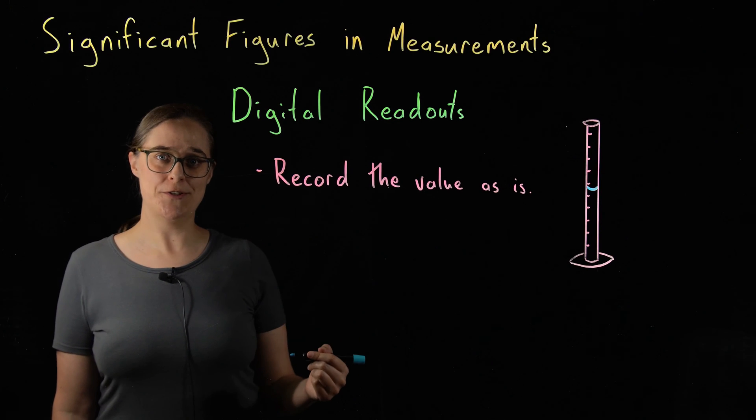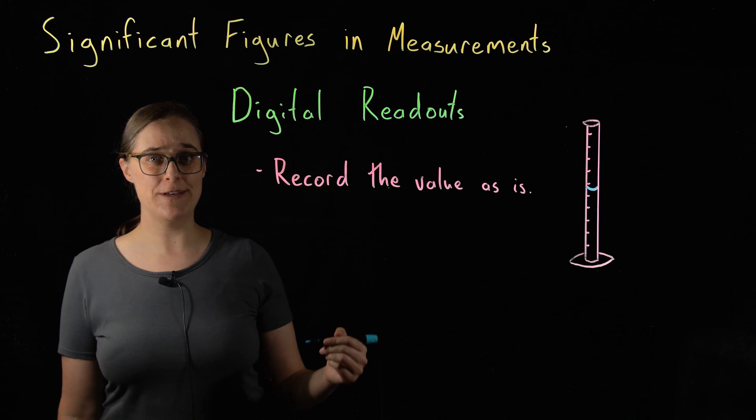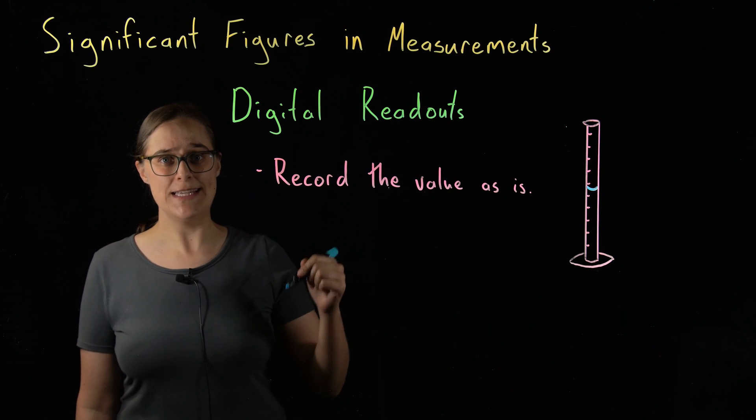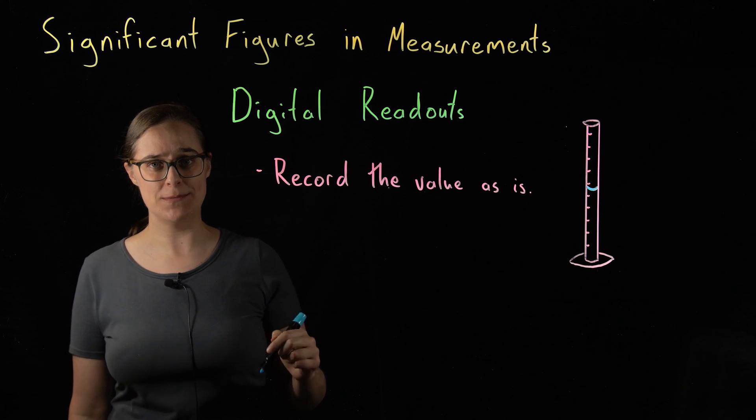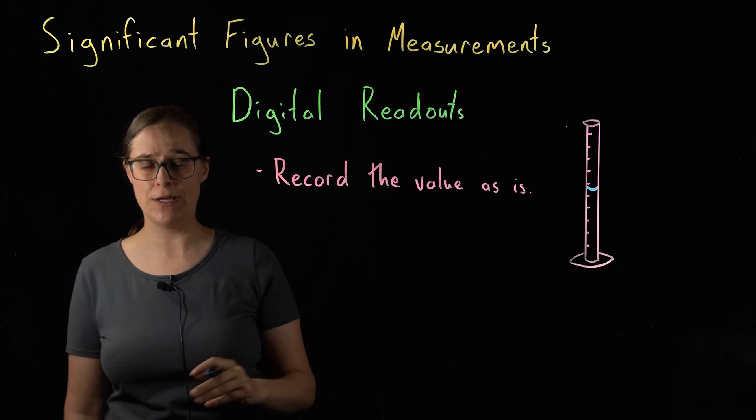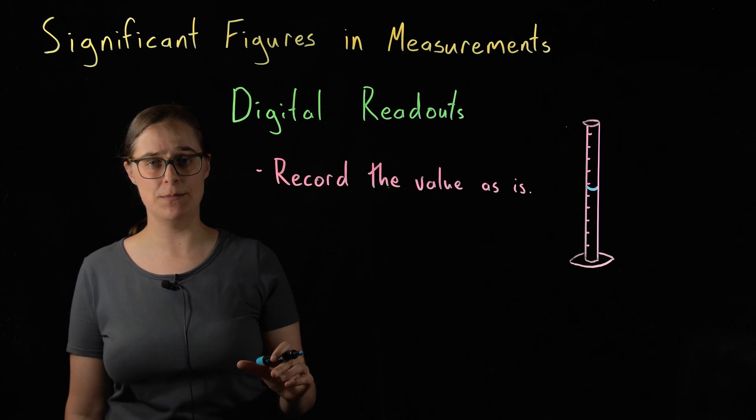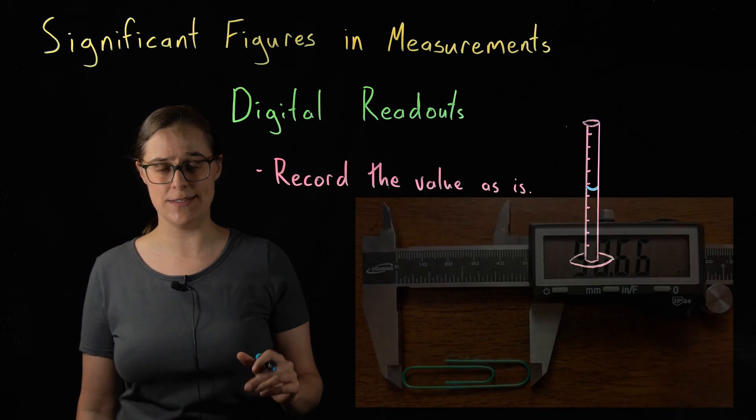The rule for digital readouts is to record the value as is. The instrument is already estimating one more significant figure for you. Your only job is to write that number down exactly the way you see it.